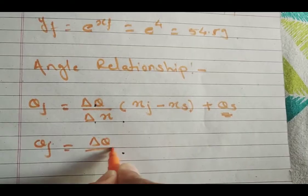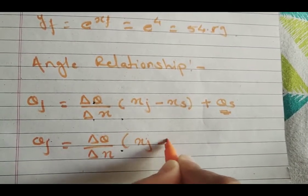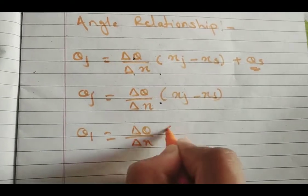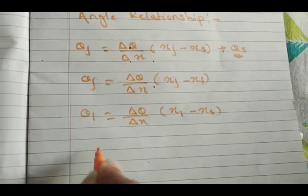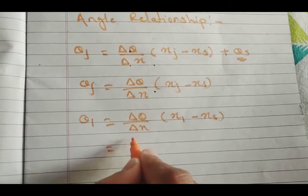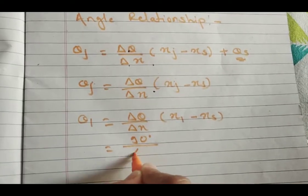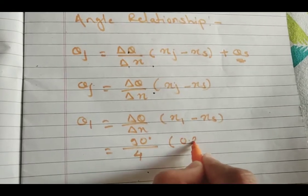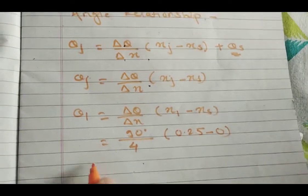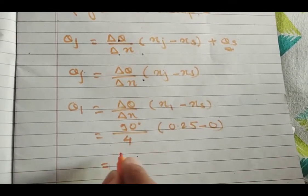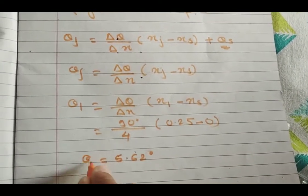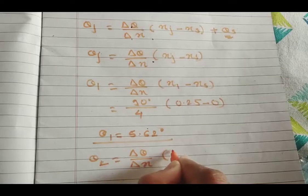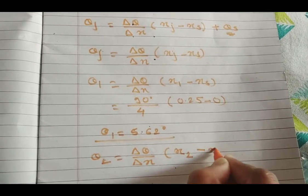Theta_1 = (delta_theta / delta_x)(X1 - Xs). Delta theta is 90 degrees, delta x is 4, X1 is 0.25, Xs is 0. Doing this calculation, we get theta_1 = 5.62 degrees. Similarly, calculate theta_2 and theta_3 using the same formula with X2 and X3.